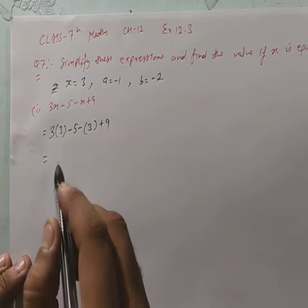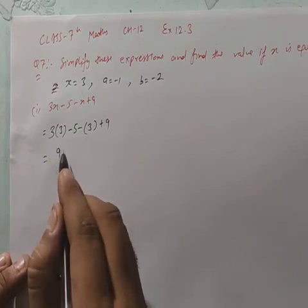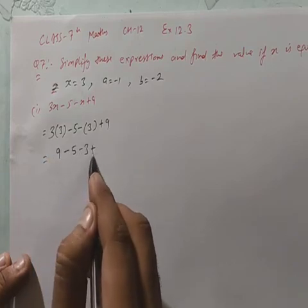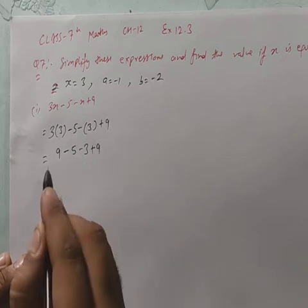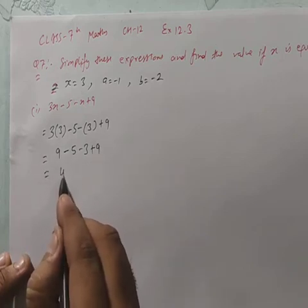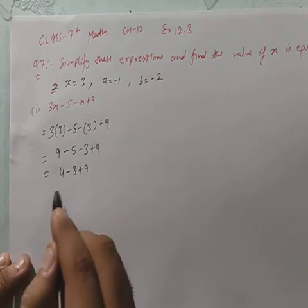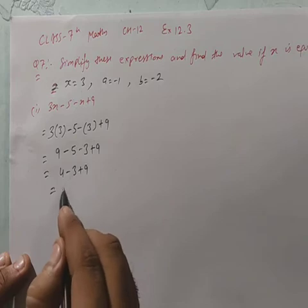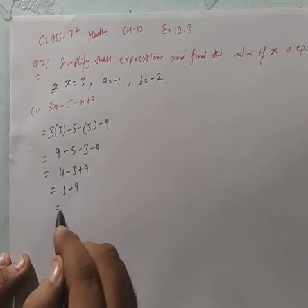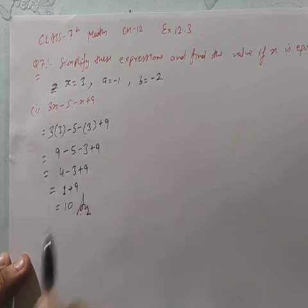Simplify करो: 3×3 = 9, minus 5 = 4, minus 3 = 1, plus 9 = 10. तो यह आपका answer आ जाता है: 10.